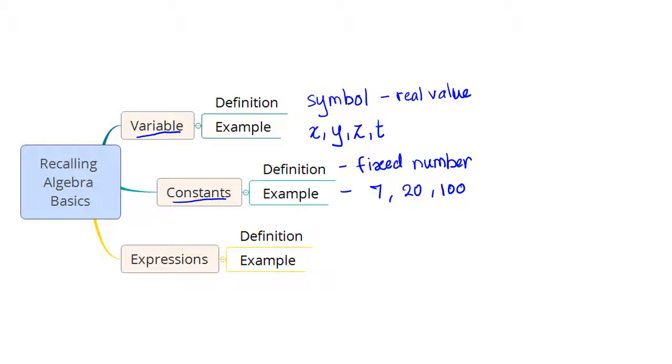Then we come to the next idea and that is of expressions. Expressions are nothing but simply a combination of constants and variables. We basically combine these two together. We multiply them, we add them, we divide them to form algebraic expressions.